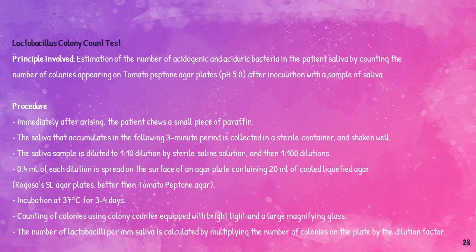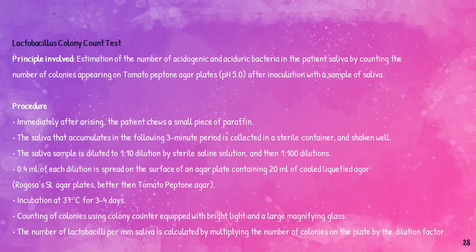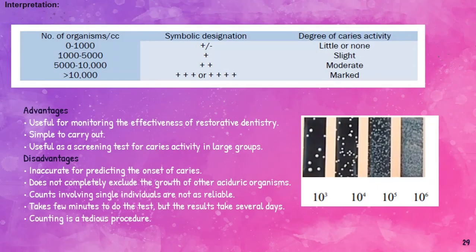The saliva is diluted to 1:10 and then 1:1000 dilutions in sterile solution. 0.4 ml of each dilution is spread on the surface of a culture plate containing 20 ml of liquefied agar and then incubated for 3 to 4 days. After incubation, the colonies are counted using light and magnification glasses. The number of Lactobacillus per ml of saliva is calculated by multiplying the colony count by the dilution factor. The count is correlated with caries activity: 0–1000 indicates no caries activity, 1000–5000 indicates slight caries activity, 5000–10,000 indicates moderate caries activity, and greater than 10,000 indicates marked caries activity.